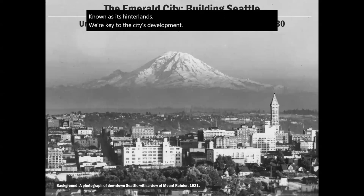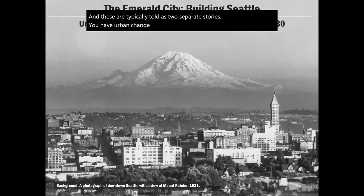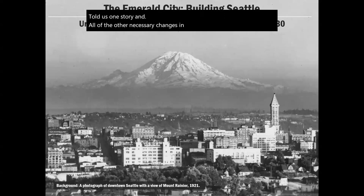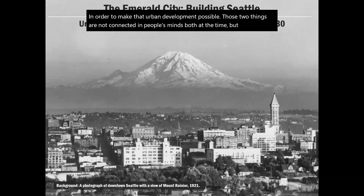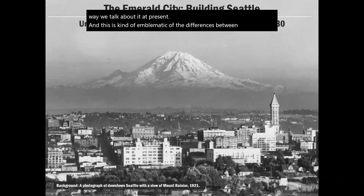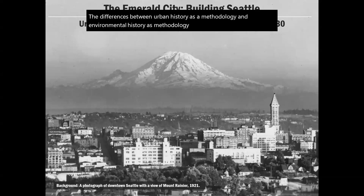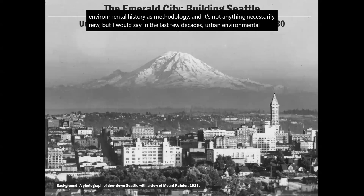These are typically told as two separate stories: urban change and development on one hand, and all of the necessary changes in the rural parts of the territory to make that urban development possible. Those two things are not connected in people's minds — both at the time and in the way we talk about it today. This is emblematic of the differences between urban history and environmental history as methodologies. In the last few decades, urban environmental history has made a concerted effort to blur those lines.